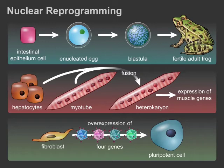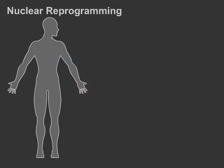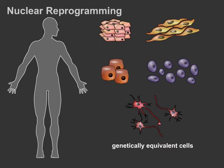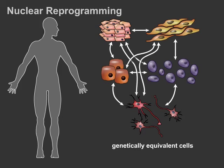Taken together, these experiments suggest that cell differentiation and associated epigenetic changes are reversible. Almost all cells in the body are genetically identical, even though their distinct morphology and behavior is determined by a specific pattern of gene expression. Nuclear reprogramming describes a change in the nuclear gene expression of one cell type to that of an unrelated cell type or embryo. The genetic equivalence across cell types makes nuclear reprogramming feasible.